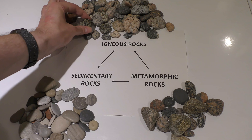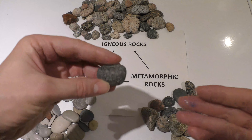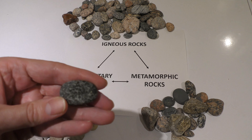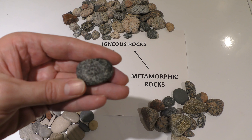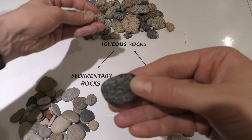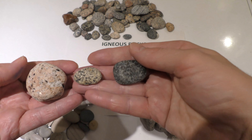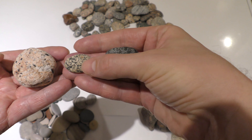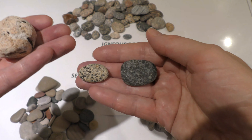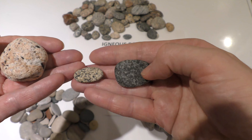Another thing we can tell is how evolved an igneous rock is. The first-formed igneous rocks are going to be darker — they'll have mafic minerals like olivines and pyroxenes, which form first when magma starts to crystallize. As more of those darker minerals precipitate out, we get progressively fewer dark minerals. So this would be our most mafic, this one less mafic, and this one even less mafic still. As we get progressively fewer dark crystals, that means more and more of the magma has crystallized. This lightest one is the most evolved — formed after the largest amount of the magma chamber has crystallized — and the darkest is the least evolved, the first to crystallize.